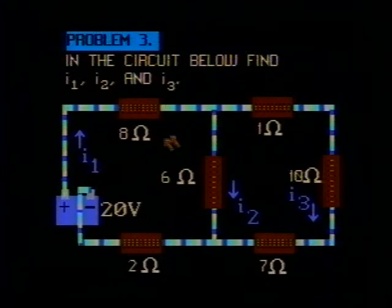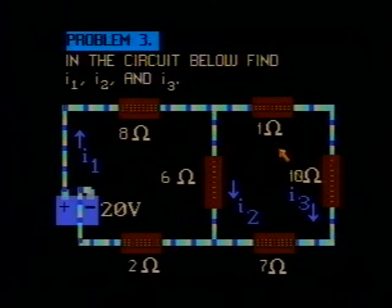I1 is the current through the battery. It splits at this point into two branches. I2 flows down through the 6-ohm resistor. I3 flows through the 1, the 10, and the 7-ohm resistors.